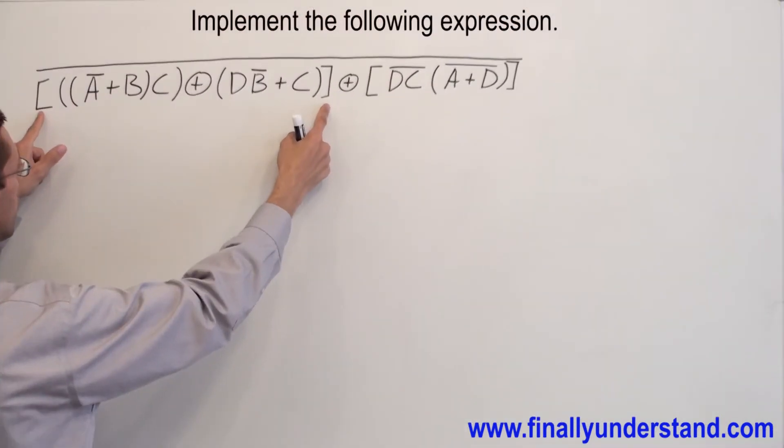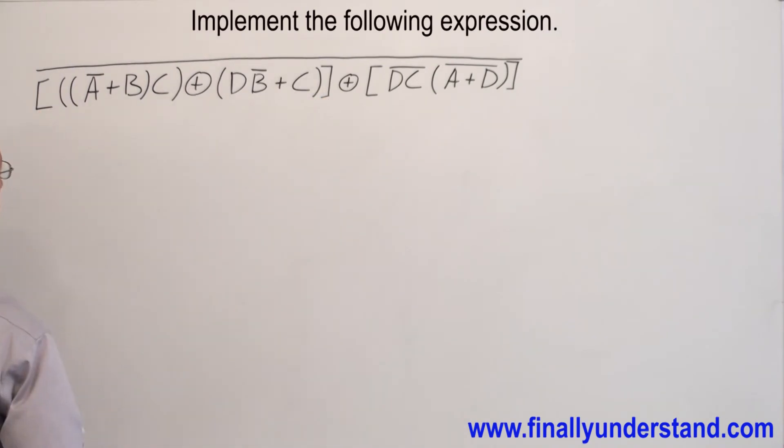I am going to start from these brackets first. I am going to start from the internal parenthesis, like always. I have A node, that is why I am going to have an inverter, and B. I have A, B, I have OR gate.